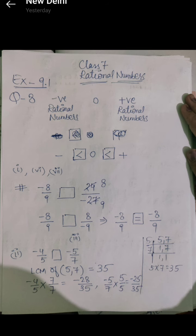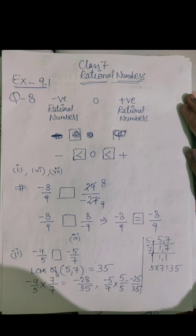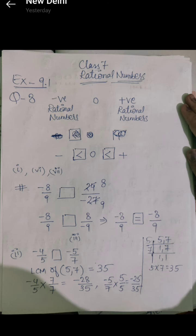I have written that negative rational numbers come first, then zero, then positive rational numbers — this is how you represent them on the number line too. The further right a number is, the bigger it is. So positive is the biggest, then zero, then negative is the smallest — even smaller than zero. According to that, we have done the first part, sixth part, and seventh part.